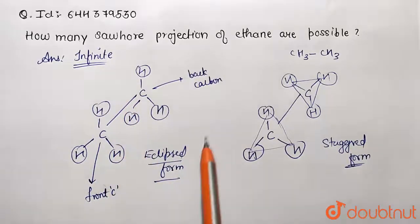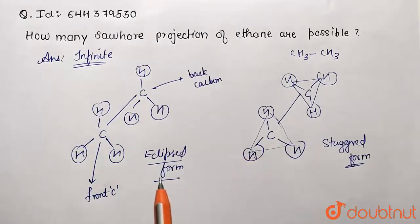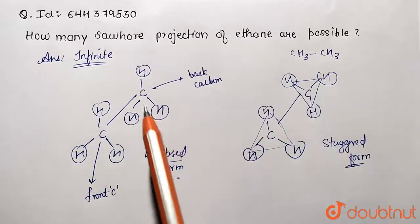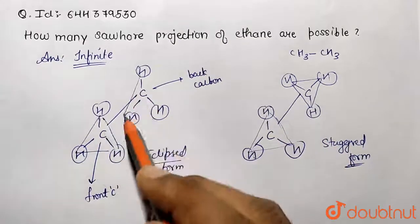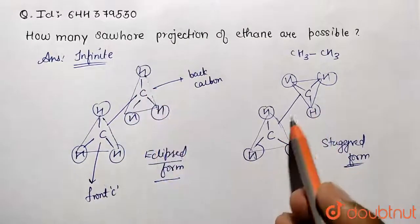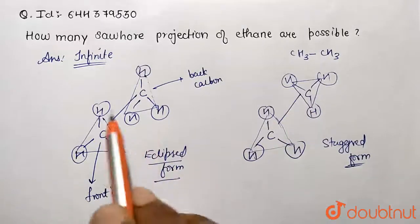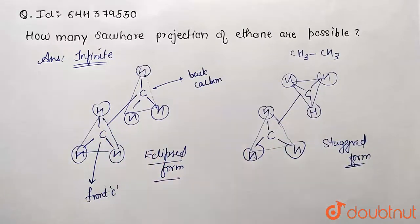So there are many orientations that can be drawn, and over here I have shown the two: eclipsed form and the staggered form, which are exactly same triangles. So these are triangles the same. And this was our exactly opposite. And they can have infinite orientations in between them. So this was the solution. Thank you.